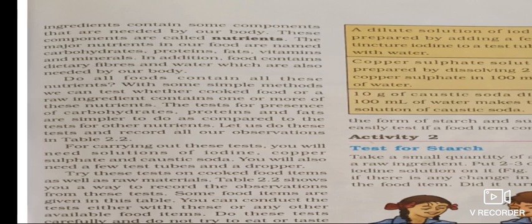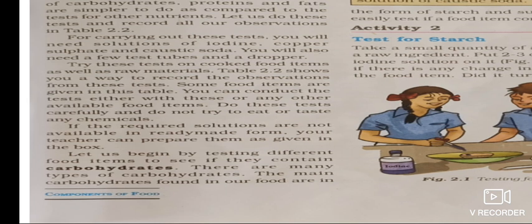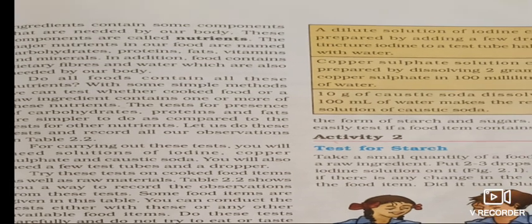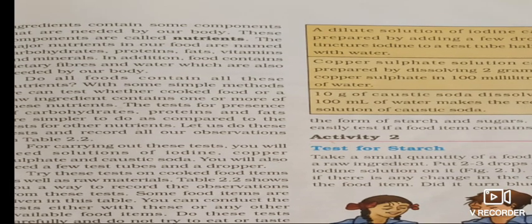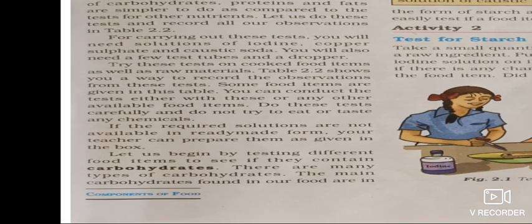First, let's know about carbohydrates. You are aware of carbohydrates from earlier classes. Carbohydrates are nutrients present in food to give us energy — our body gets energy through carbohydrates. These carbohydrates are substances that contain carbon, hydrogen, and oxygen. When these are chemically combined, they form carbohydrates. When we take carbohydrates, our body gets instant energy.